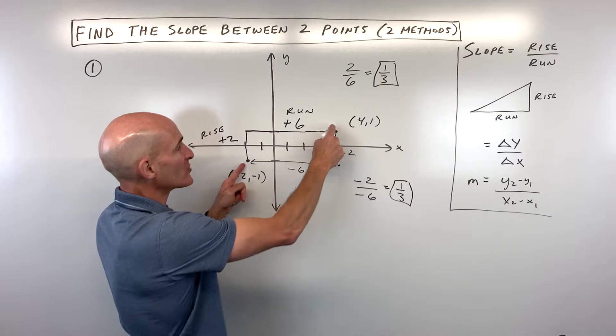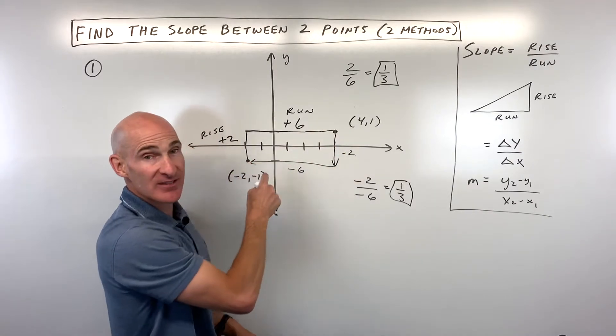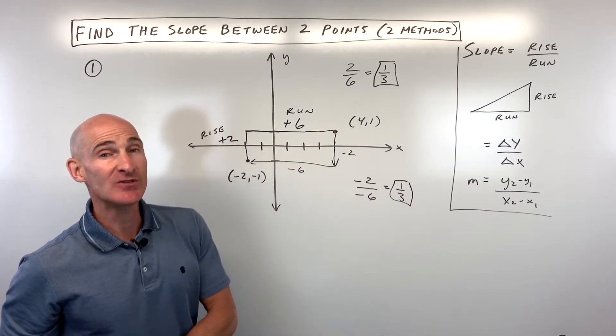You're just thinking about how do I get from one point to the other point. I could go up 2 and over 6, or I could go down 2 and left 6. Either way you get the same slope.